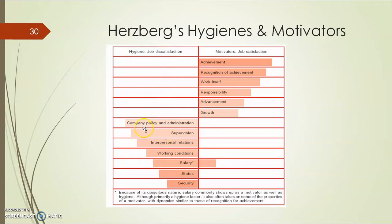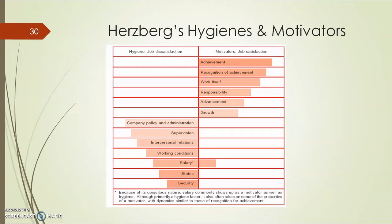If workers were not getting these hygiene factors, they were dissatisfied with their job. Now, the motivators were: achievement — getting the opportunity to move forward — recognition, responsibility — being given the chance to own the responsibility of one's work — advancement and growth, getting the opportunity to grow in one's career. Herzberg classified these factors as motivators.